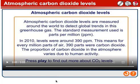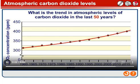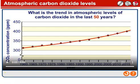The proportion of carbon dioxide in the atmosphere varies due to human activity. This graph shows the trend in atmospheric levels of carbon dioxide in the last 50 years. Notice the gradual upward trend. It is important to recognize that within each year there are seasonal changes in the level of carbon dioxide in the atmosphere — dips corresponding to spring and summer months when plants are growing and photosynthesizing more rapidly.